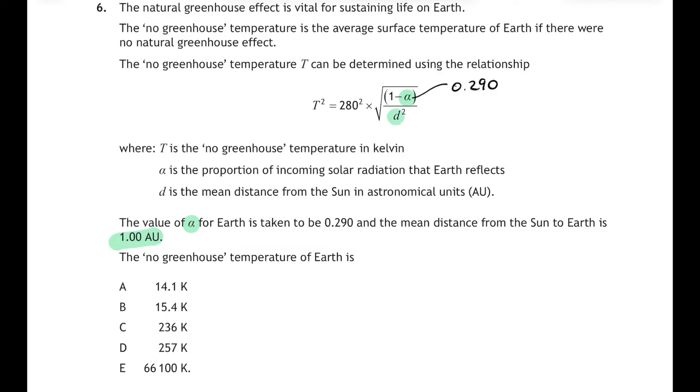And d is the mean distance from the sun to the earth, and it's 1 AU. Now an AU is an astronomical unit, but we've just to sub in that number, so let's just sub a 1 in for d on the bottom line there. And now let's substitute everything in and simplify it. So T squared will be 280 squared times the square root of 1 minus 0.29. And if you do that on your calculator, you'll get T squared is equal to 66,100. Now wait a minute, that's one of the answers, but beware, because that's T squared. We're looking for the no greenhouse temperature of the earth, so that's just T.